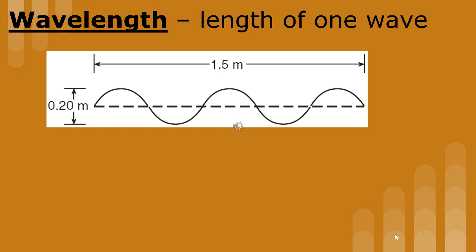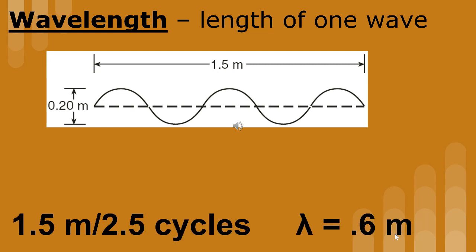Use the method that we learned in the previous slide to find the wavelength of this wave. The wavelength of this wave train is one point five meters. Since we have two and a half cycles, we take the one point five meters and divide it by two point five, and we get a wavelength of point six meters.